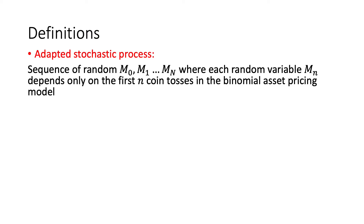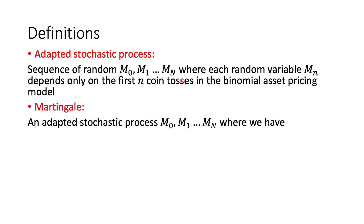Definition: an adapted stochastic process is nothing but a sequence of random variables M0, M1, ..., Mn, where each random variable Mn depends only on the first n coin tosses in the binomial asset pricing model. M0 is typically known and not random, but everything after that could be random. A martingale is just an adapted stochastic process where E[M_{n+1} | F_n] = M_n. So our best guess of the future is just the current value of the random variable.